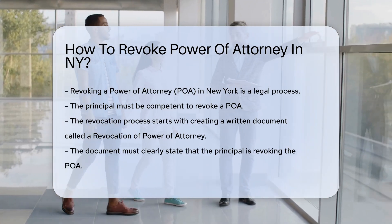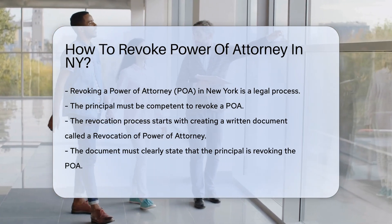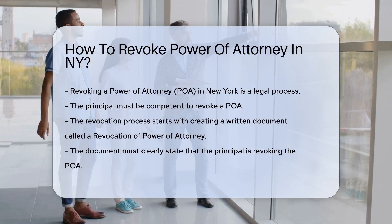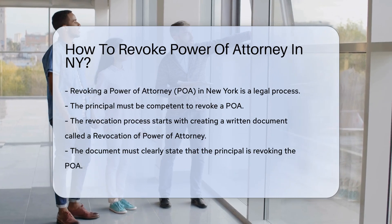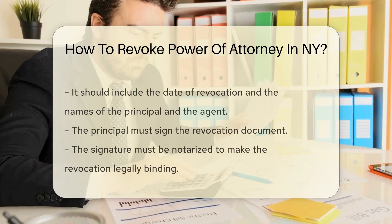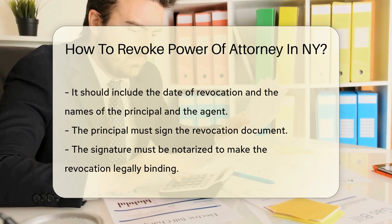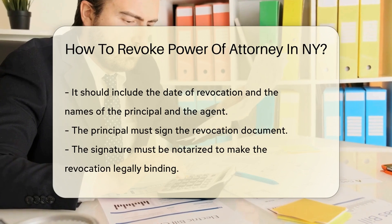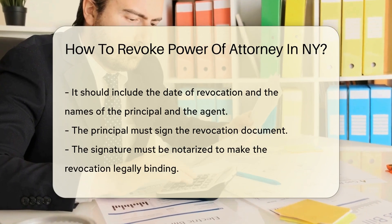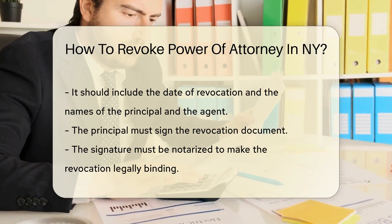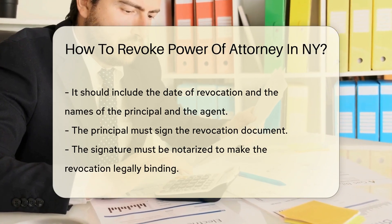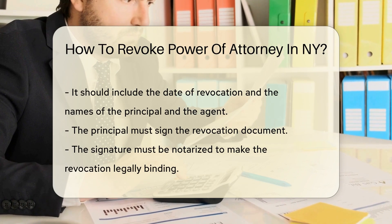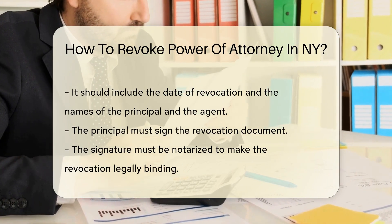The revocation process begins with creating a written document called a revocation of power of attorney. It must clearly state that the principal is revoking the POA, and should include the date of revocation and the names of the principal and the agent.